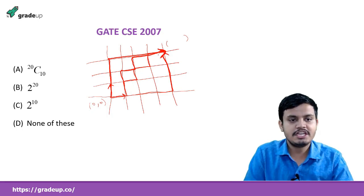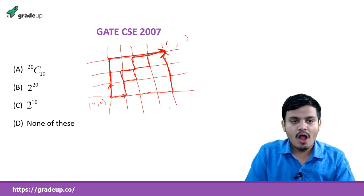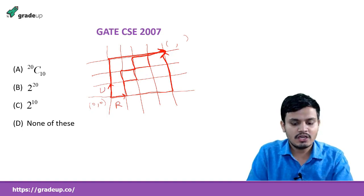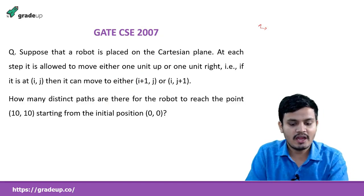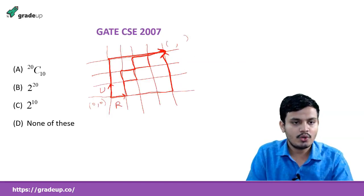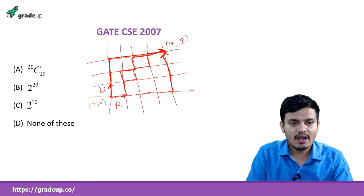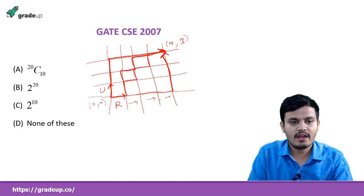I am writing one unit right as R and one unit up as U. The question asks for point (10, 10), but I am first solving it for point (4, 3) as an example, and then we will extend it to (10, 10). To reach (4, 3), we need exactly 4 rights and 3 ups in any order.